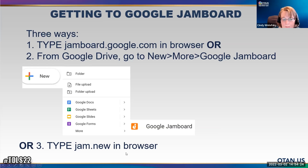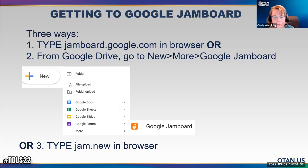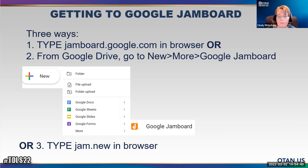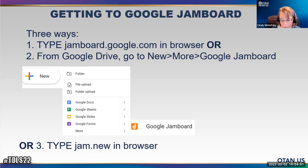There are basically about three ways to get to Jamboard. As with other Google products, you put the name of the product before .google.com, so jamboard.google.com works. You can go to your Google Drive, go to New, then More, then Google Jamboard. Or a real shortcut is just typing jam.new in your browser — that's an easy way to do it.